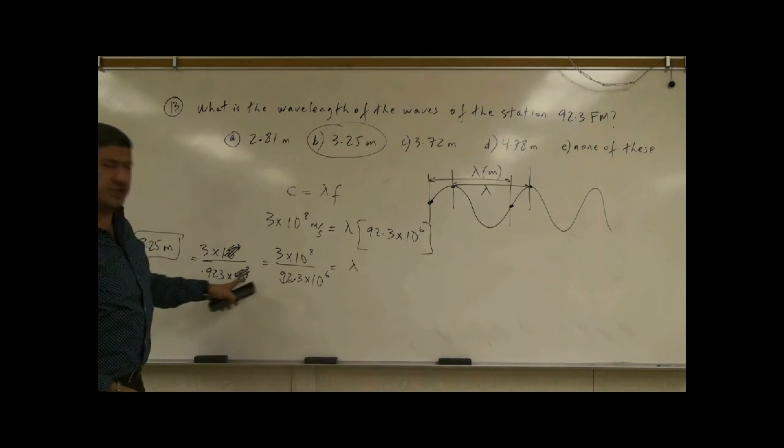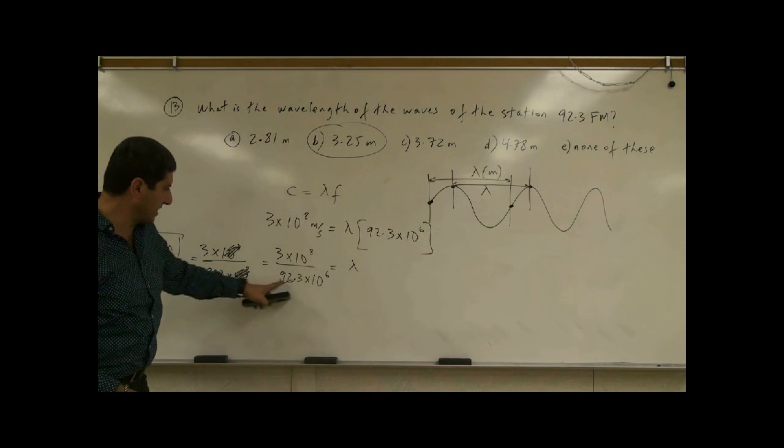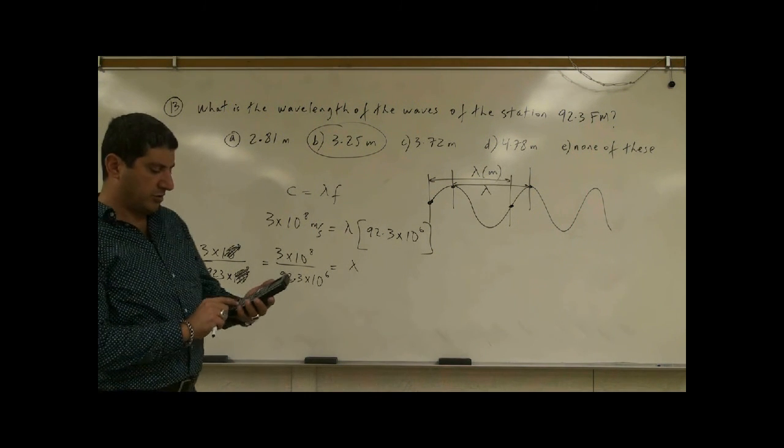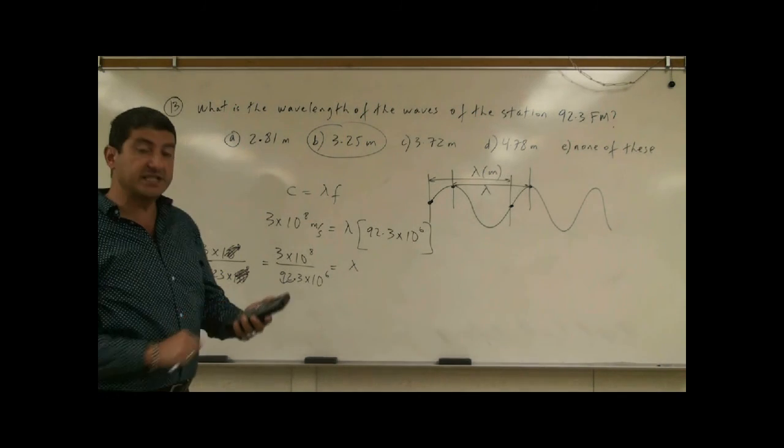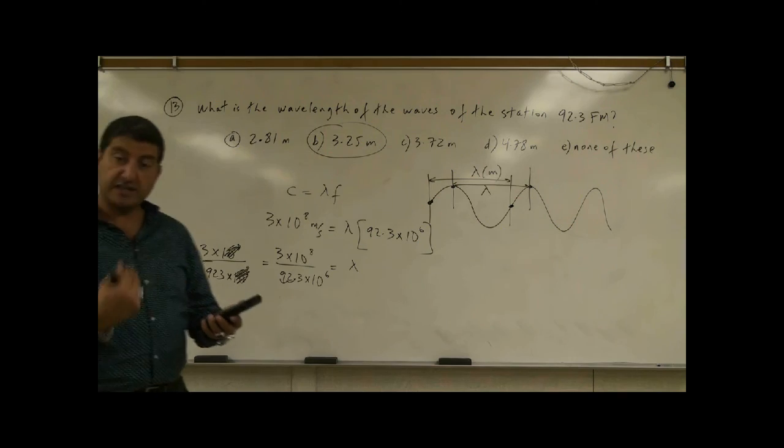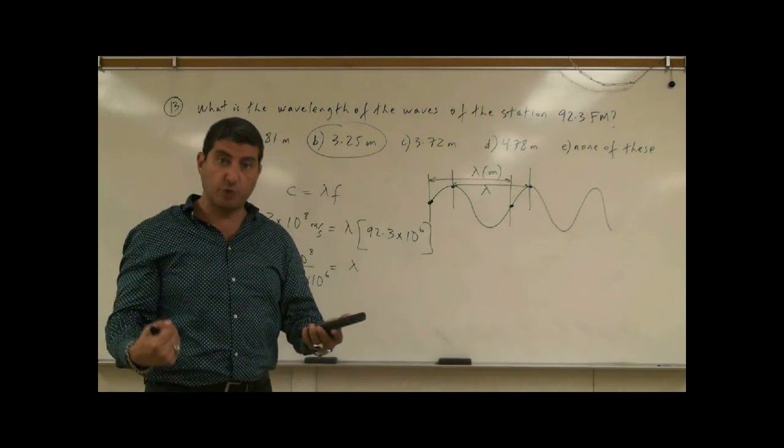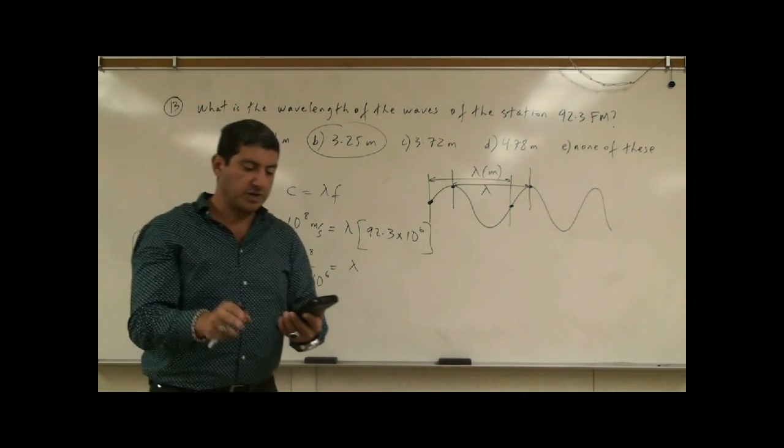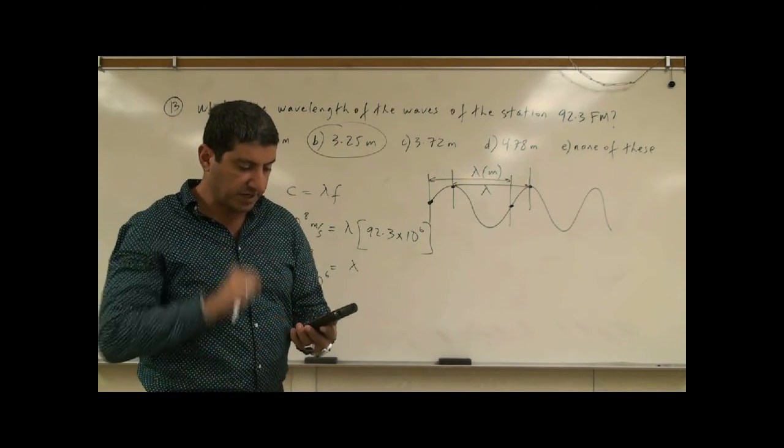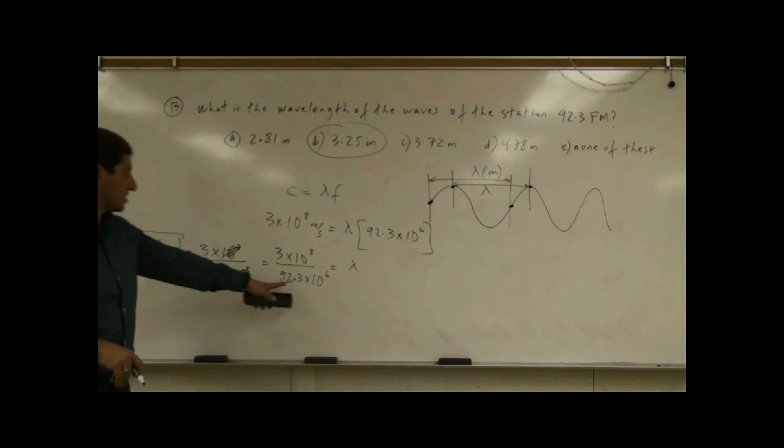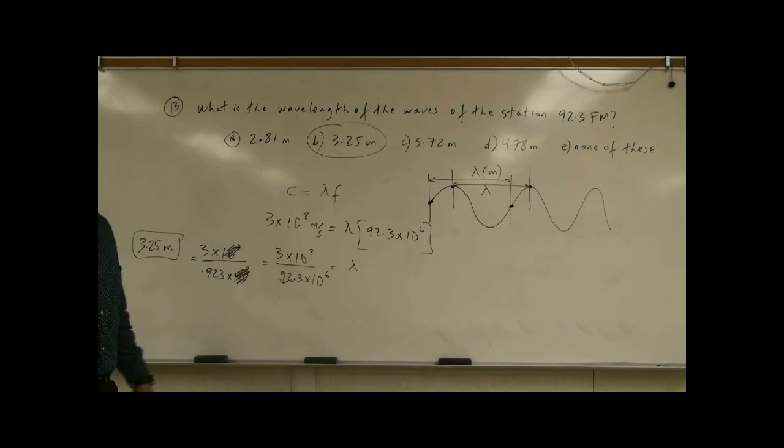If you don't want to do this changing of the scientific notation, changing the decimal and making it the same power of 10, you can just simply put it into your calculator. Do three times 10 to the power of eight divided by 92.3. You divide it by 92.3, and also you divide it one more time by 10 to the power of six. So three times 10 to the eight divided by 92.3 divided by 10 to the power of six, and then press enter. 3.25 meters, you still get the same thing. So you don't have to do this moving the decimal over and making the same power of the 10.